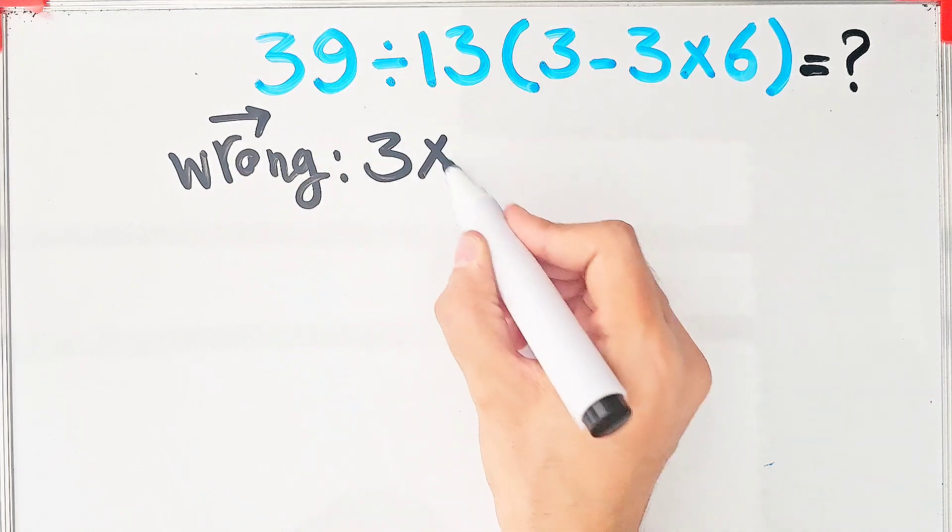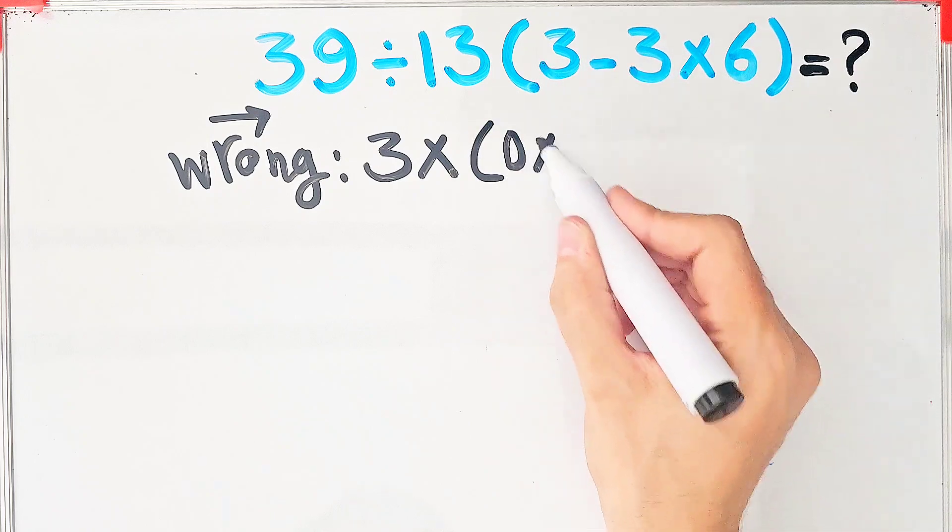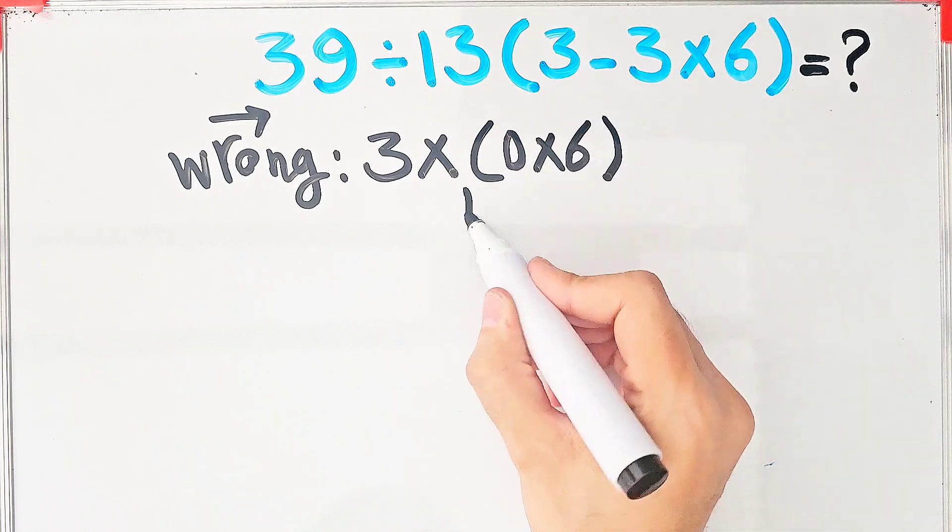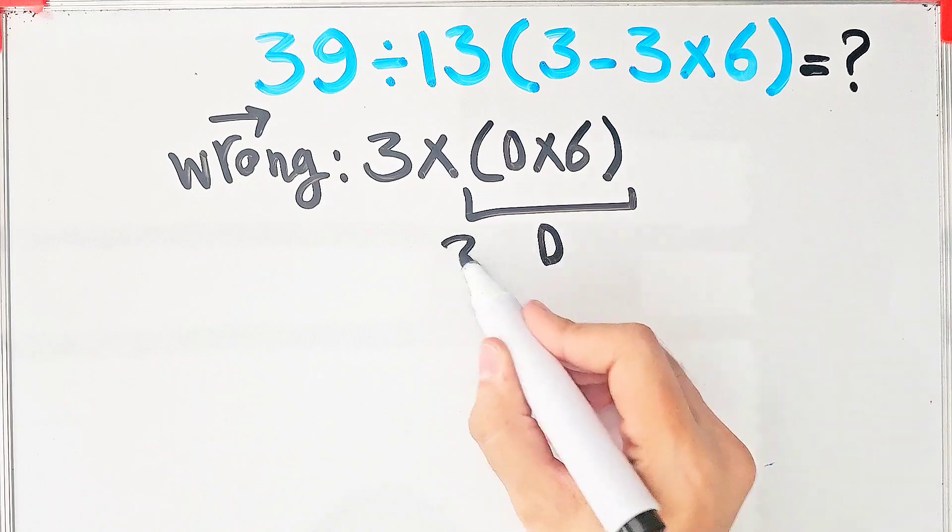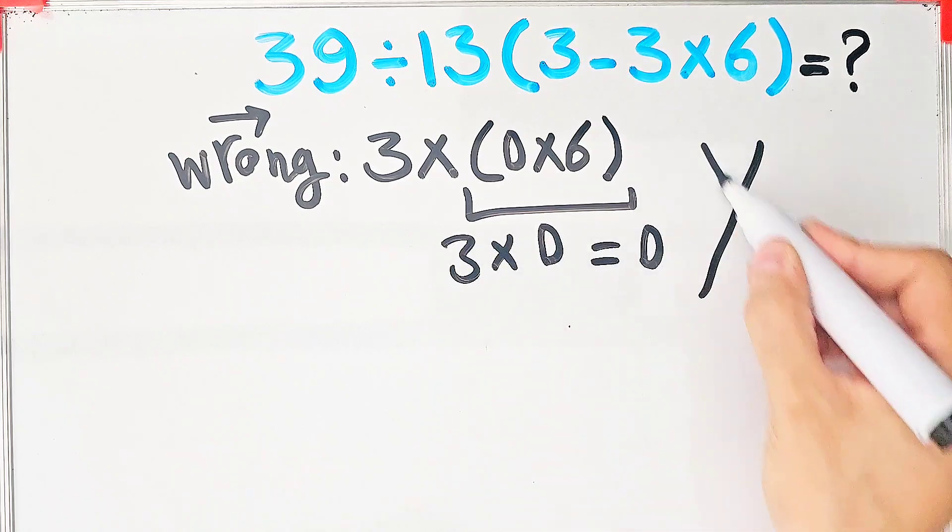39 divided by 13 equals 3. 3 times 3 minus 3 equals 0, then times 6. 0 times 6 equals 0, and 3 times 0 equals 0. But this answer is definitely wrong.